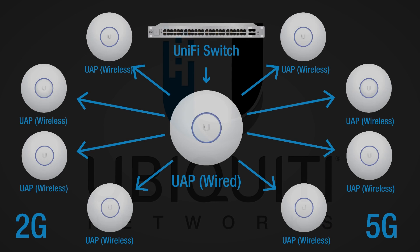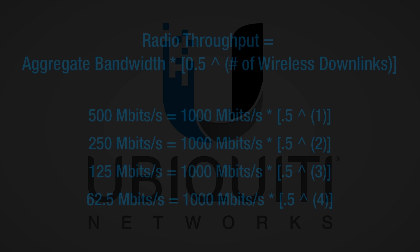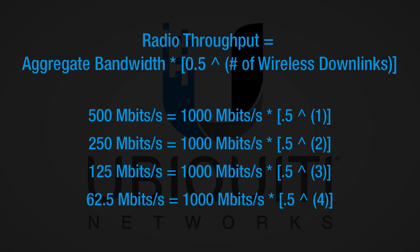Each wired UAP can establish up to four wireless downlinks per radio to nearby non-wired UAPs. However, each downlink introduces a 50% reduction to the maximum available bandwidth for that radio.